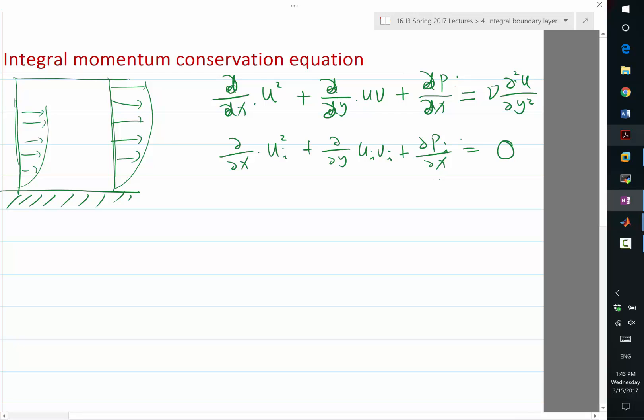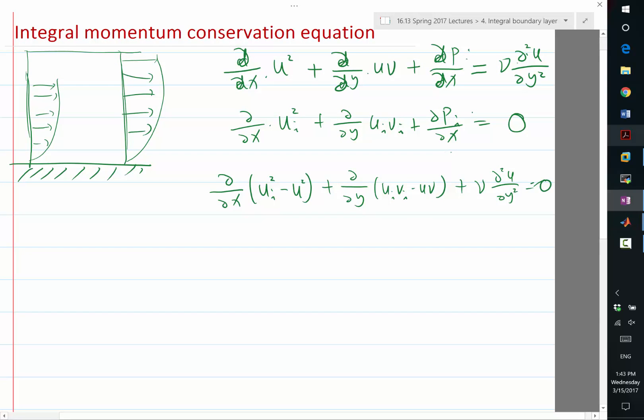So when we subtract these two equations, what we get is partial partial x of ui square minus u square plus partial partial y of ui vi minus uv plus nu times this is equal to zero. And we again want to use Gauss's theorem. So we are going to write this as the divergence of something. So how can we write this as divergence of something? So divergence of f is equal to zero. Now what is f? It has to have an x and y component.